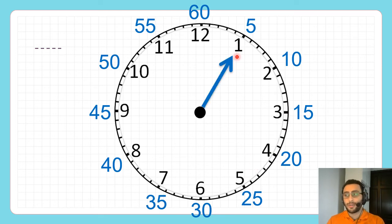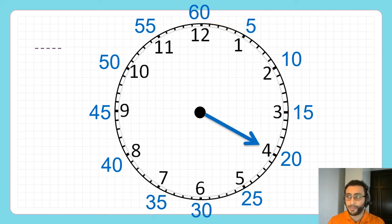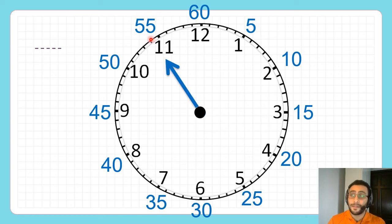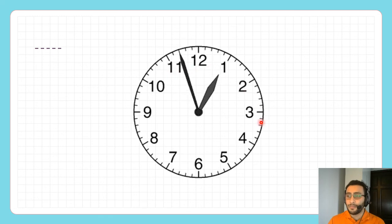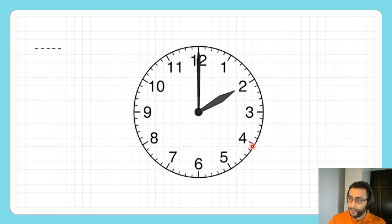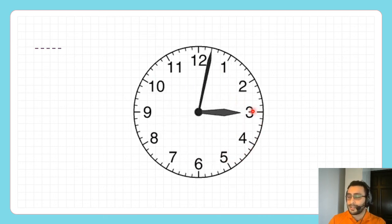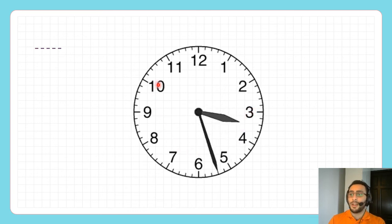Let's look at this again — how many minutes is this? 5 minutes: 1, 2, 3, 4, 5. This is 5 minutes. This is 20 minutes. This one is 55 minutes. This one is 40 minutes. Remember, as the minute hand moves, the hour hand moves too. When the minute hand makes one full turn, the hour hand goes to the next number.